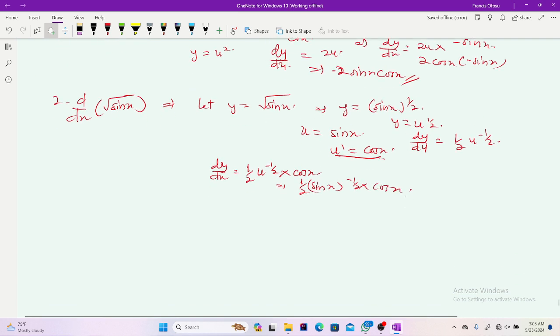We can simplify it better. Because this is the same as 1 over 2 root sin x, multiplying cos x. And we're getting cos x over 2 root sin x.